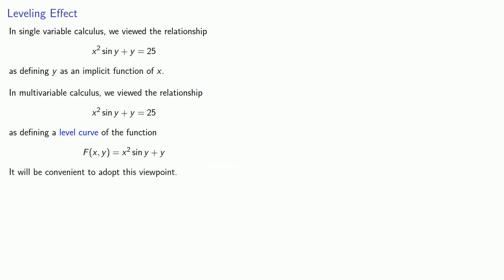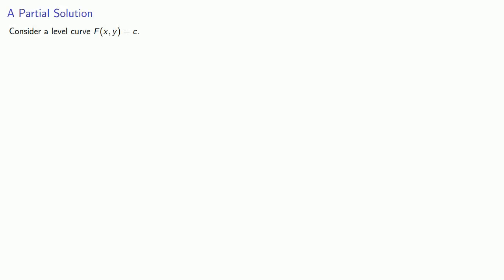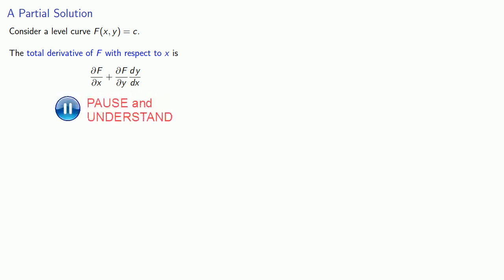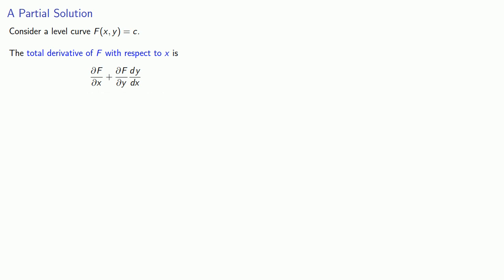It will be convenient to adopt this viewpoint. Consider a level curve of the form f of x, y equals some constant c. The total derivative of f with respect to x is going to be the partial derivative of f with respect to x, plus the partial derivative of f with respect to y, times the derivative of y with respect to x. This is essentially implicit differentiation using partial derivative notation.